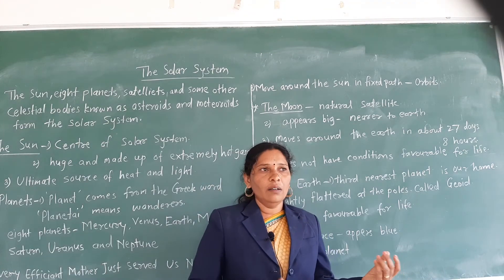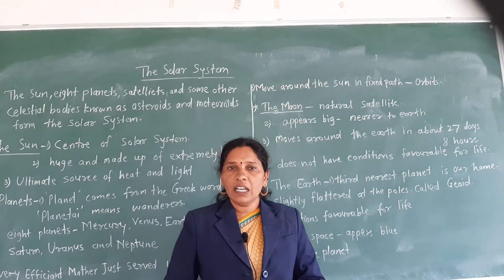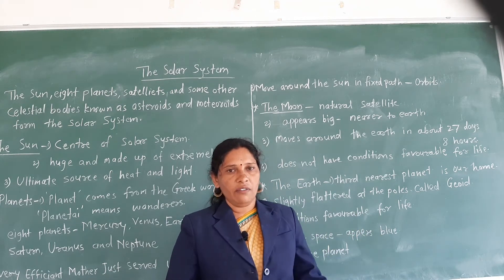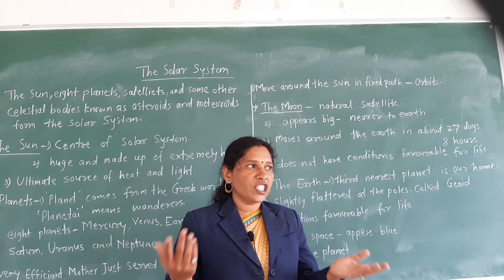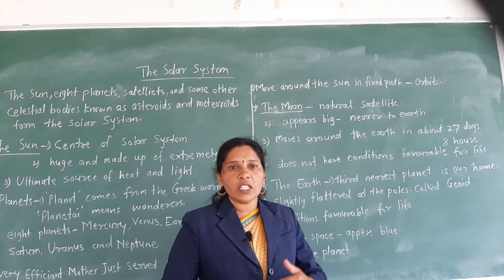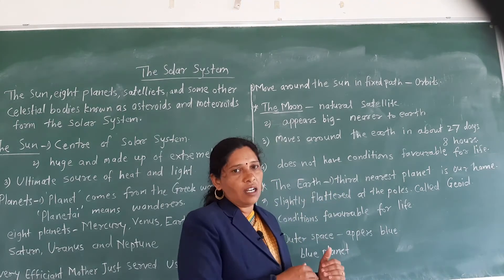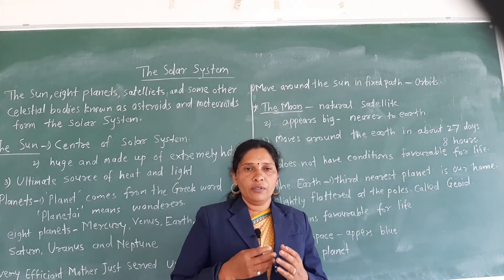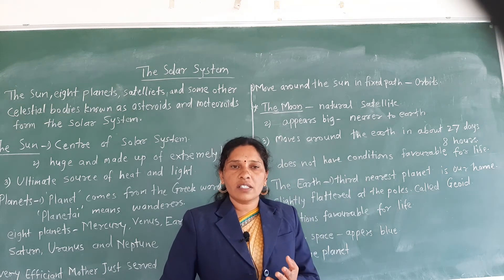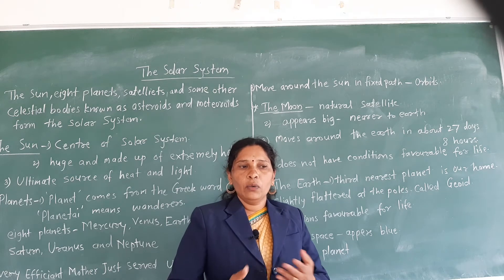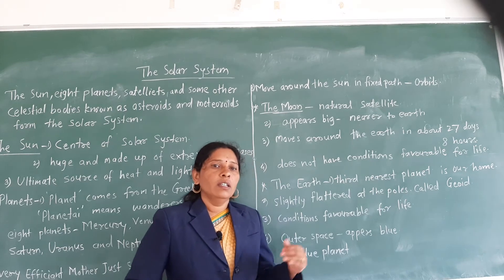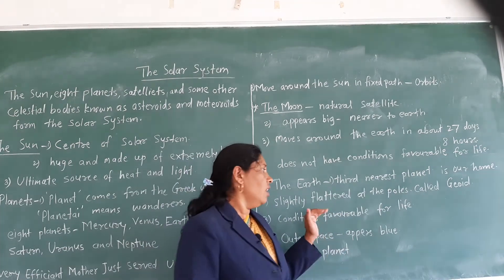On the Earth we can see the diversity of life. There are many types of organisms, living things, animals, plants, and trees. Life is possible on the Earth because whatever conditions we need to survive — air or oxygen, water, food — are all available on the Earth.